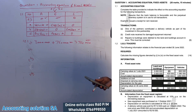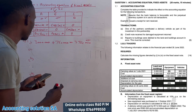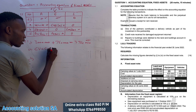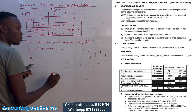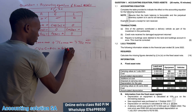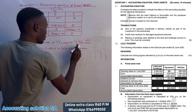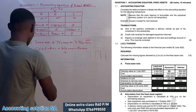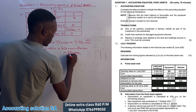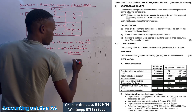Moving to the next one — Roman numeral II: we have to calculate the carrying value at the beginning for equipment. The carrying value formula is cost minus accumulated depreciation. Our cost is 420,000 minus accumulated depreciation of 160,000, which gives us 260,000. There were three marks allocated for this one.